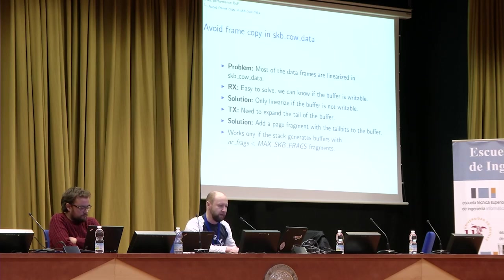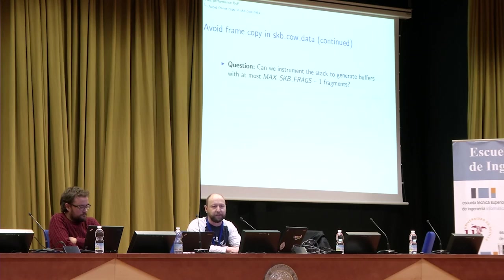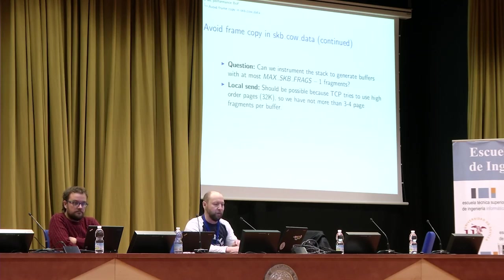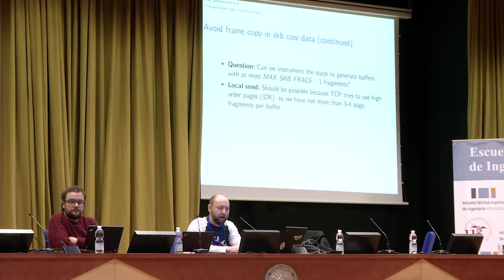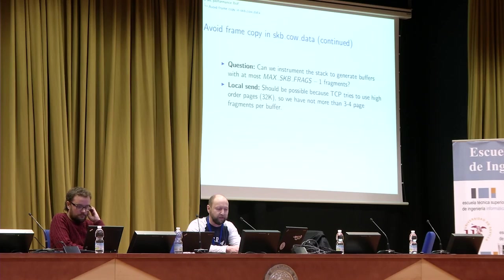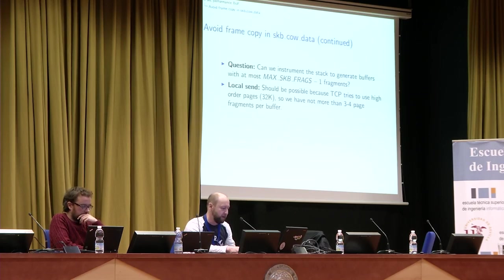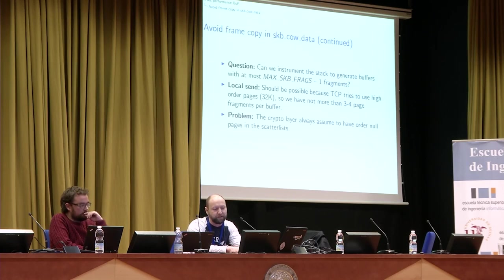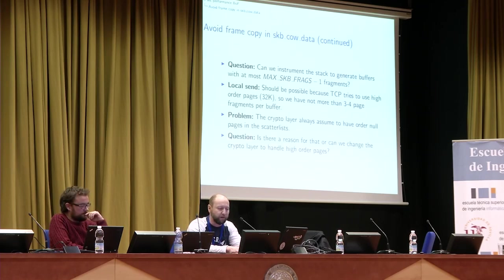The question is: can we instrument the stack somehow to generate these kinds of buffers? On local send it's probably possible because TCP tries to use high-order pages, so we have no more than three to four fragments per buffer. When I tried to implement that, I faced strange bugs and it turned out the crypto layer always assumed all null pages in the scatter list — which is incompatible with how we generate buffers in networking. So the question is: is there a reason for that, or can we change the crypto layer to handle high-order pages like networking does?